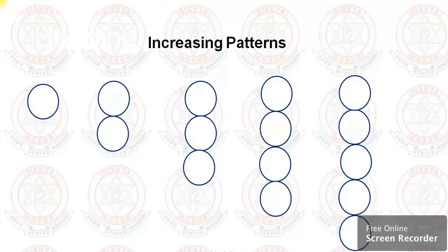Increasing patterns — what is the meaning of increasing? It is adding. You can see here there are circles. The first step there is only one circle, next step two circles, next is three circles, next is four circles.